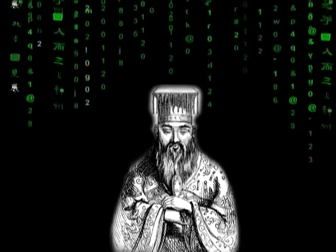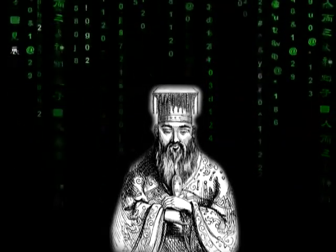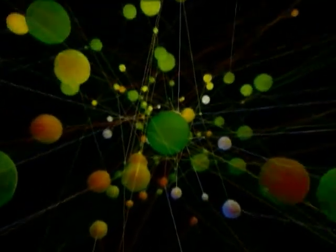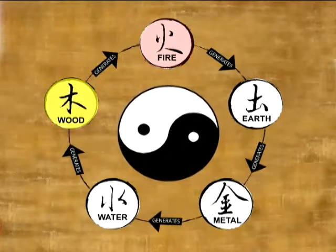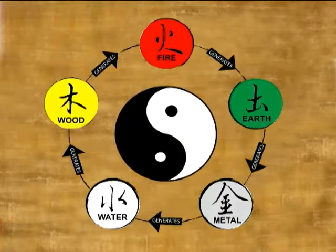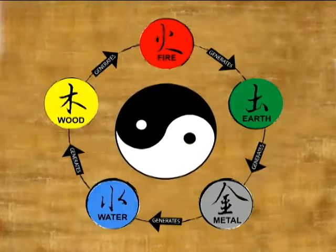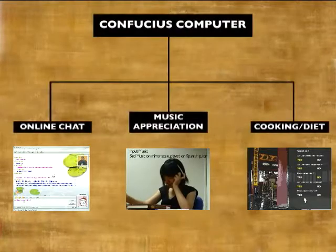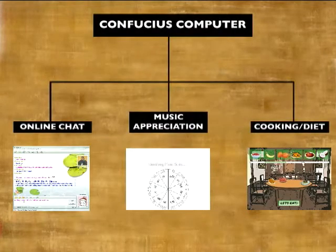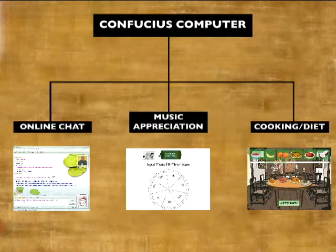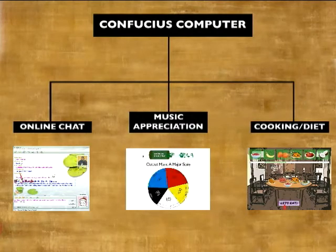Confucius Computer is a new form of illogical computer algorithm based on the ancient eastern paradigms of balance and harmony. The system orders the universe into Confucian categories such as the five elements and yin yang. The system enables users to interact, explore and experience historic teachings and philosophies through modern everyday activities such as social network chat,